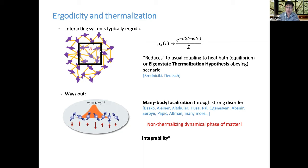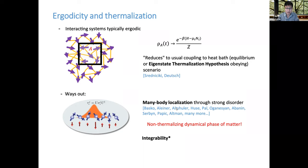From the point of view of new phases of matter, thermalization is not so interesting because you'd get pretty much what you'd get from a time-independent Hamiltonian. So we need ways out of the ergodic scenario. In recent years, we've understood that adding strong disorder — heavily disordered pinning fields in space — can lead to many-body localization, where the spins or degrees of freedom remember initial conditions for infinite time. This is one answer: a non-thermalizing dynamical phase of matter. There are also integrable systems with extensive conserved quantities, but those are fine-tuned.